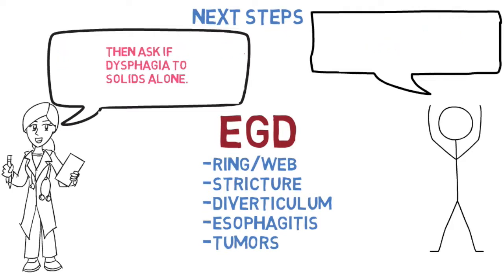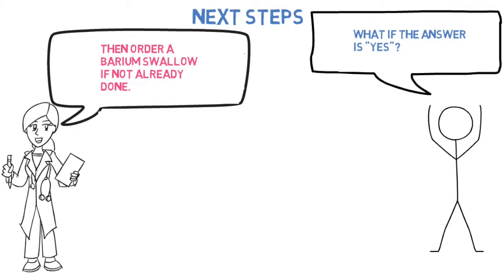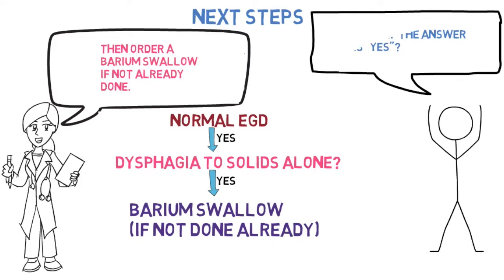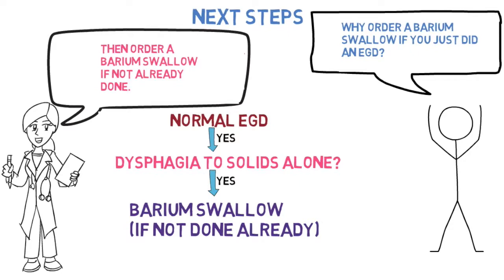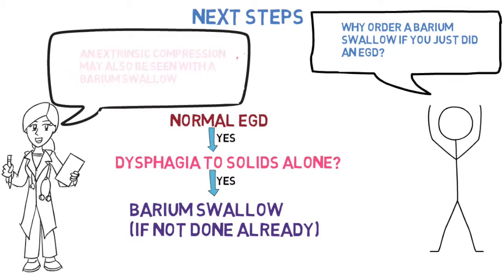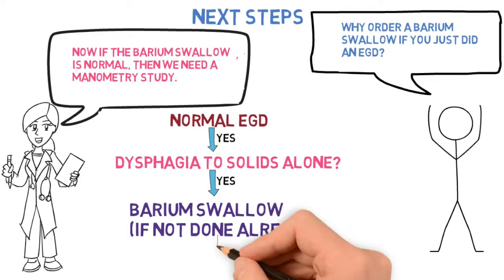If the EGD is normal, ask: is there dysphagia to solids alone? If yes, order a barium swallow if not already done. A contracted esophagus may hide a distal esophageal ring or web, so a barium swallow is more sensitive in that case. An extrinsic compression may also be seen with a barium swallow. If the barium swallow is normal, then a manometry study is needed.